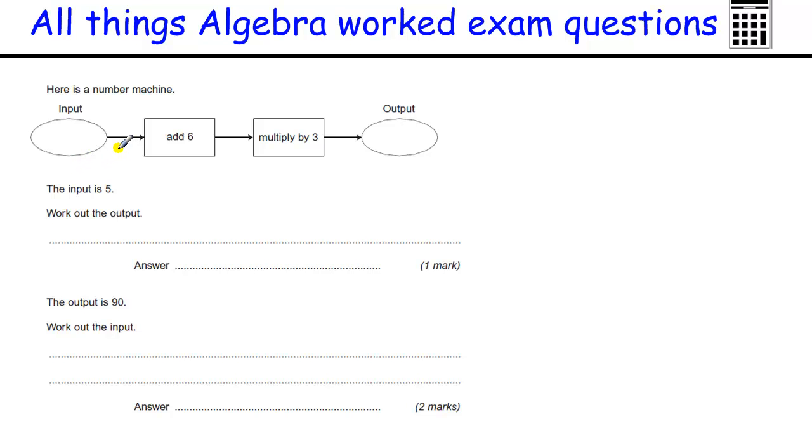Okay, here we've got a two-stage function machine. The input is 5. We're adding 6 to 5 to give us 11. And then we're multiplying 11 by 3 to give us 33. That gives us the output, which is 33.